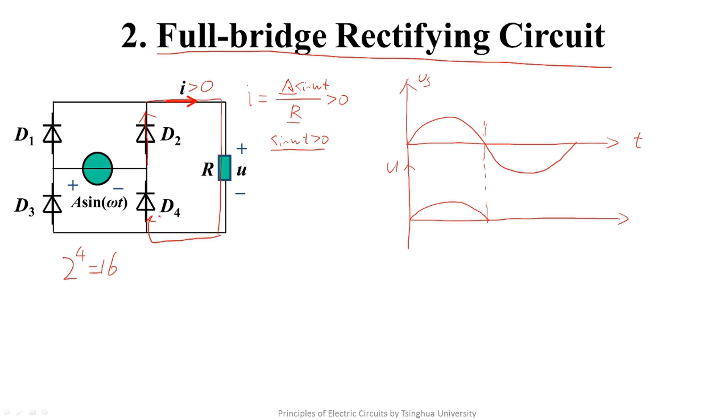Similarly, it can't flow upward here. Otherwise, it will constitute a closed current loop only consisting of pure resistors. So I3 must have a positive current. Similarly, it can't flow upward here, otherwise it also constitutes a closed current loop only consisting of pure resistors. The current needs to be greater than zero.